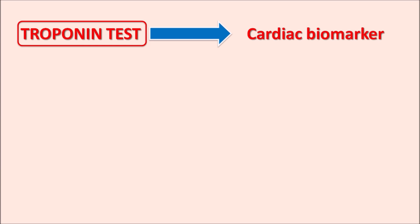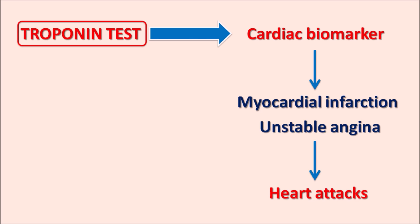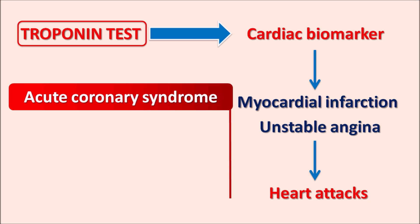The troponin test is one of the cardiac biomarker tests in order to indicate any cardiac damage. Cardiac injury may lead to conditions like myocardial infarction, and this injury can also produce pain in the heart resulting in unstable angina with severe pain and deteriorating conditions. These cardiovascular disorders may finally lead to heart attack. All these cardiovascular complications due to cardiac damage producing cardiac ischemia are collectively known as acute coronary syndrome. Troponin acts as a significant biomarker to detect acute coronary syndrome in patients.